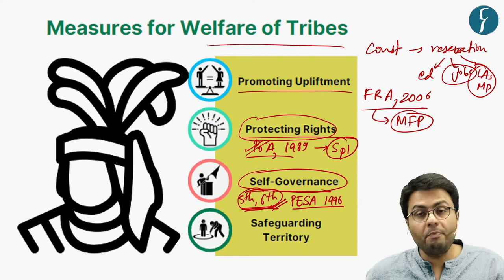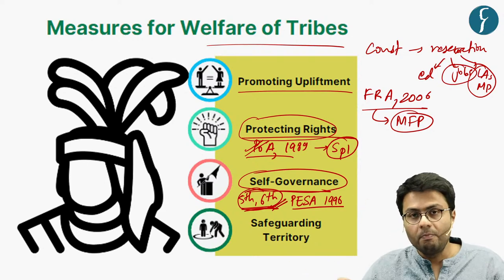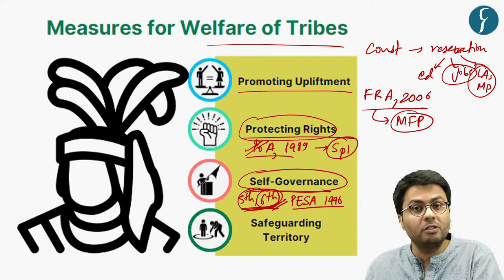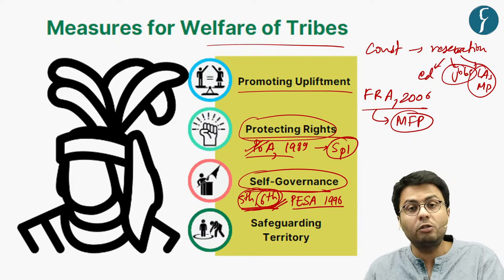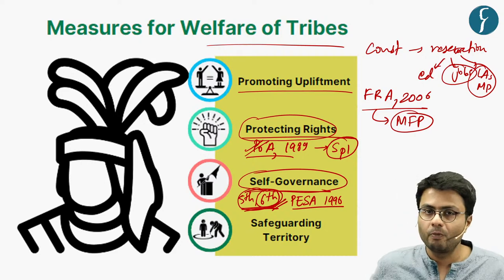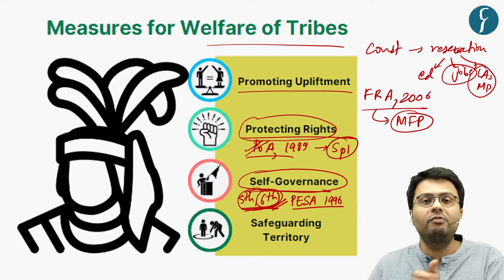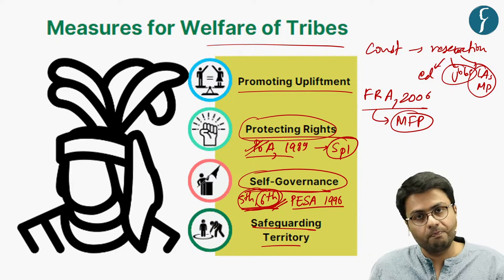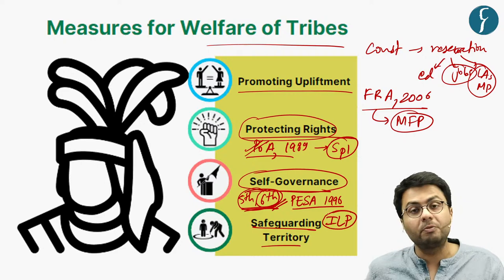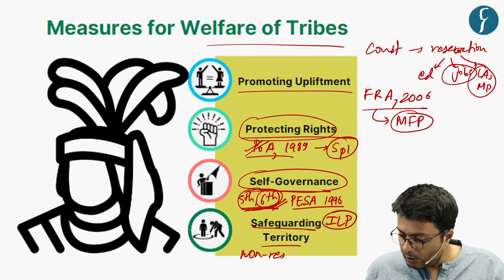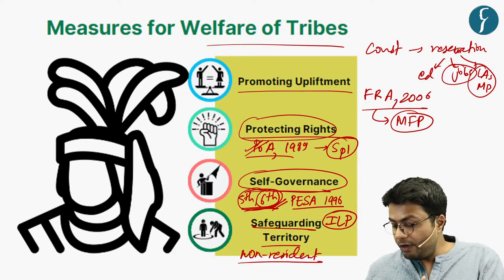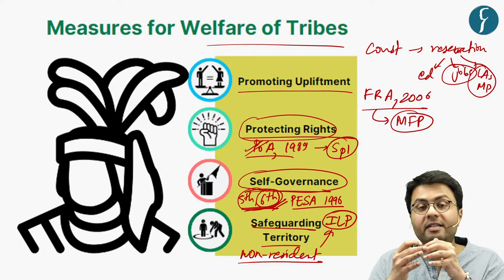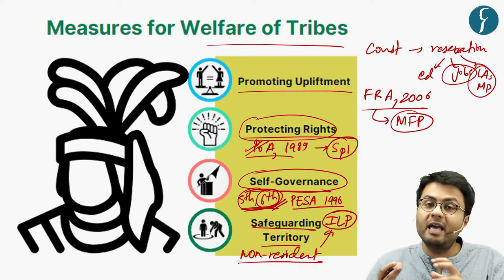Under the 6th Schedule in particular, tribals have been given increased power. Autonomous councils constituted under the 6th Schedule have not just legislative and administrative functions, but also judicial functions over 6th Schedule areas — quite an important step for tribal welfare. Furthermore, the government safeguards the territorial control of tribals over their areas through the inner line permit system. Non-residents cannot move or travel to these inner line permit areas without permission of the local administration, thereby safeguarding the territorial control of tribals over their inherited and ancestral lands.